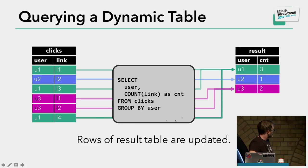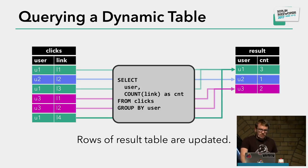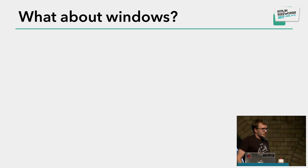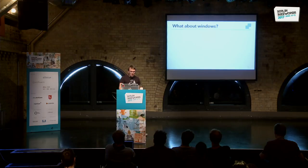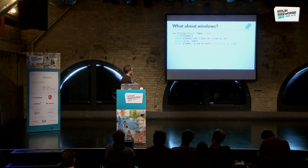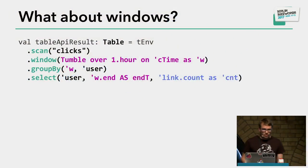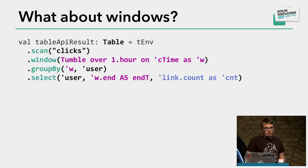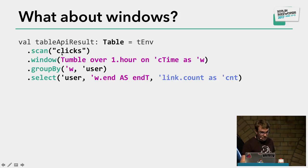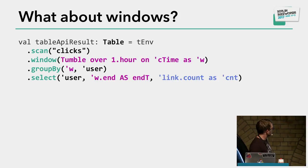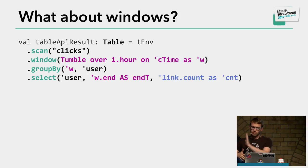You might ask: stream processing is all about windows — how do windows relate to this? Flink SQL and the Table API also support different types of windows. Here is an example with a tumbling window of one hour. Instead of counting links visited since the query started, we count for each hour how many links a user visited. We scan the clicks table, define a tumbling window over one hour on the time column C_time, and group by that window and user. The tumbling window evaluates every hour — from 12 to 1, 1 to 2, 2 to 3, and so on.